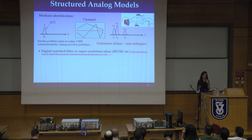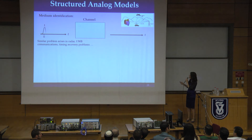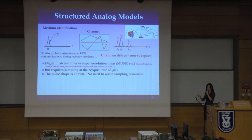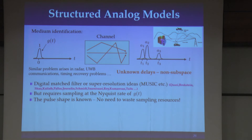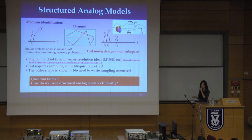All of these techniques require sampling the signal at the Nyquist rate. Let's think for a minute about what the Nyquist rate is in this particular application. The Nyquist rate of the received signal, because it's the sum of pulses, is just the Nyquist rate of the transmitted pulse — the part of the signal that you actually know. What you don't know are the times of arrival and the amplitudes. So you might be sampling at several gigahertz because that's the bandwidth of pulses used today in radar, but at the end of the day all you want to find out are six numbers. Clearly there's a huge mismatch between the Nyquist rate and the actual degrees of freedom in the signal.